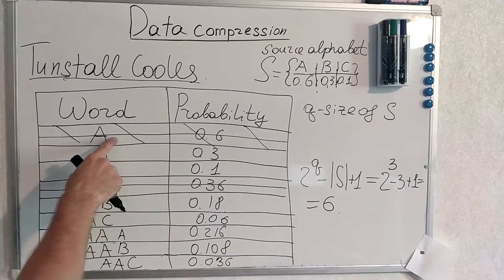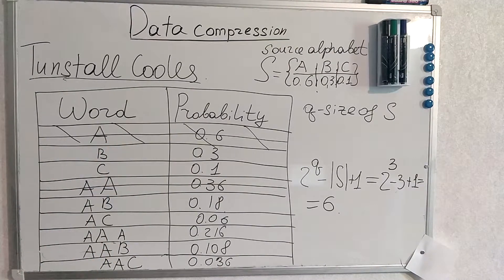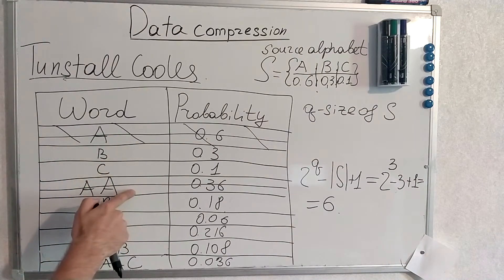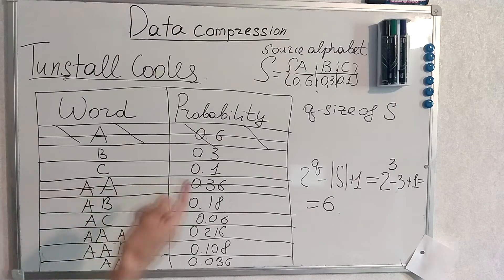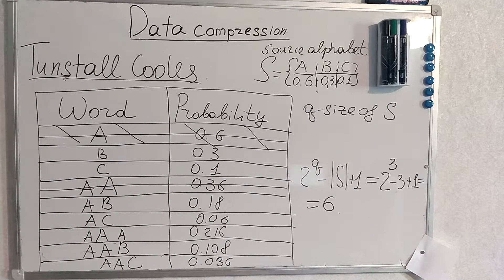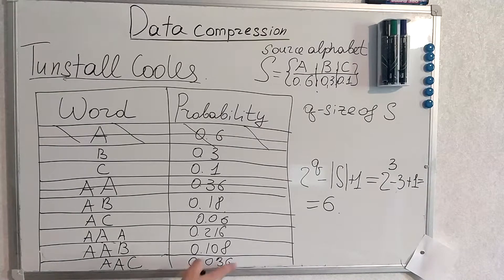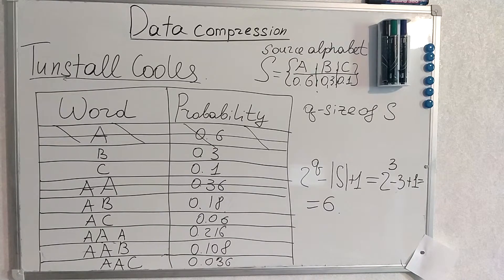Even though we have crossed this entry out, it still takes part in the multiplication of probabilities. We will just not generate a code for the crossed-out entries. We do not generate codes for the ones that have been crossed out. Later, according to these probabilities, we can generate codes for our symbols.